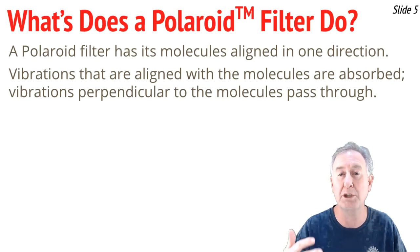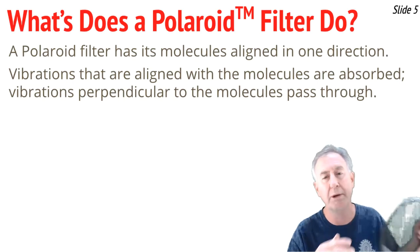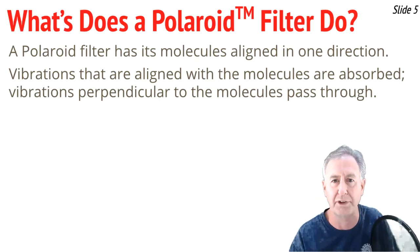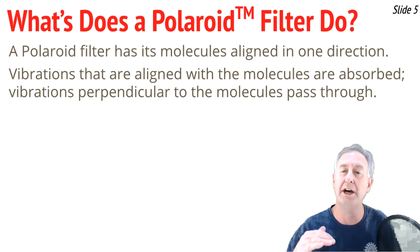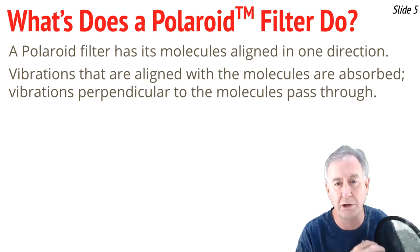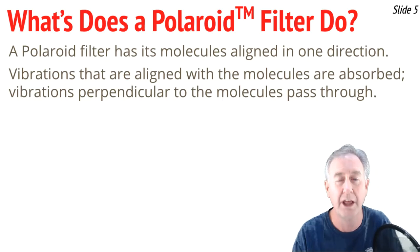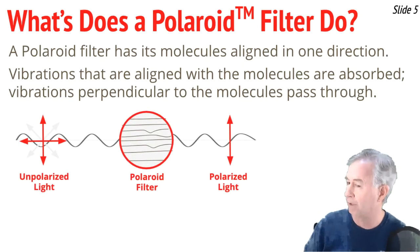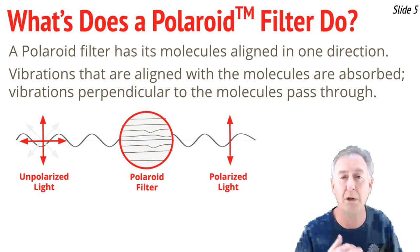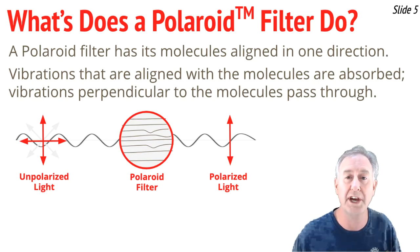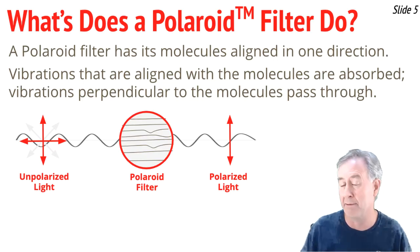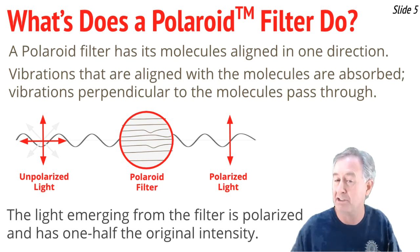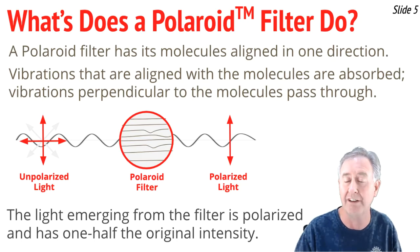So the question is: what does a polaroid filter do to this unpolarized light? When a polaroid filter is made, it's made in such a way that the molecules are all stretched in one direction across the filter — maybe they're all stretched horizontally. As unpolarized light approaches that filter, those molecules block or absorb or filter out the vibrations that are aligned in the same direction as the filter. You can see on this diagram that the molecules are all aligned horizontally, the horizontal vibrations get blocked, and the vertical vibrations get through. So what a filter does is it blocks one half of the light — the half that has its vibrations parallel to the alignment of the molecules in the filter.